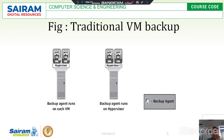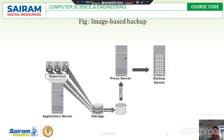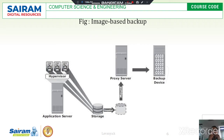In the image-based backup, the application server, storage, proxy server, and backup device all work together as an image-based backup. The client executes applications through the storage and proxy server. The proxy server and storage work as a backup file or backup device in a single image — meaning all the images are stored in a single file, and that single image acts as the backup device.